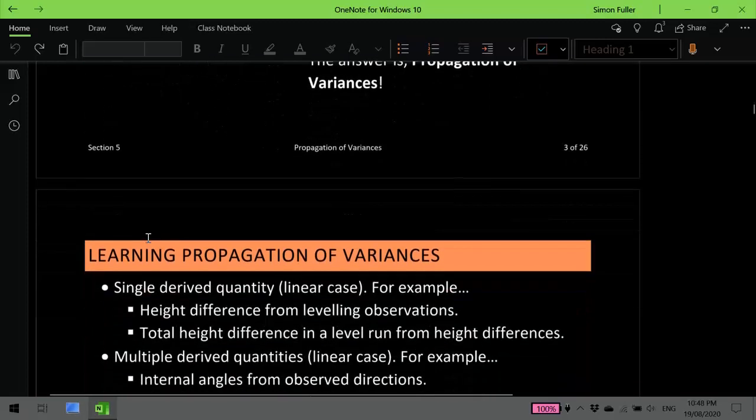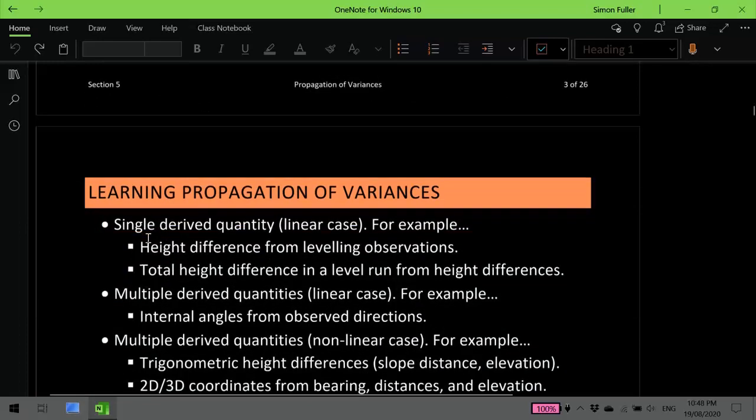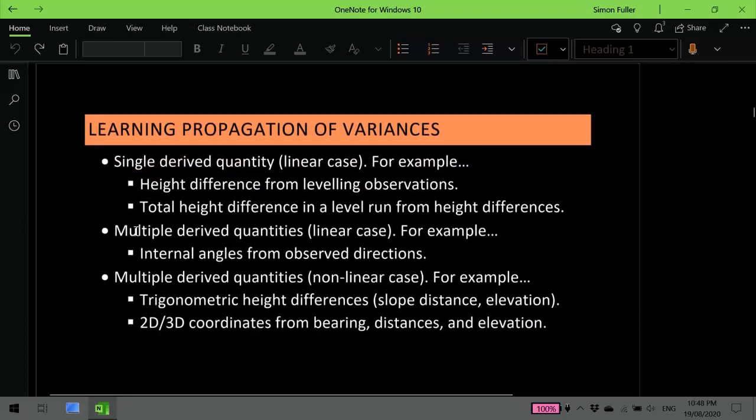So we are going to learn how to use propagation of variances in three different scenarios. First of all, if we just have one value that we're calculating, so a single derived quantity, and the relationship between the measurements and the quantity are linear.